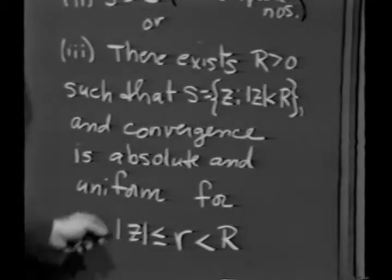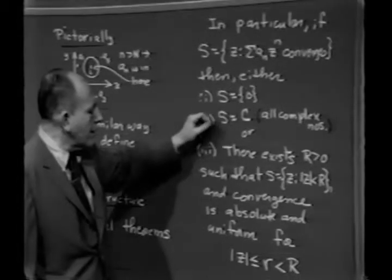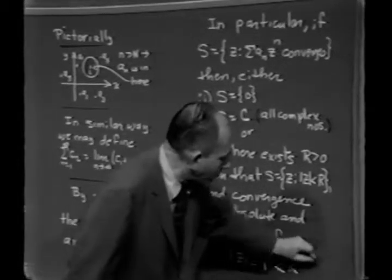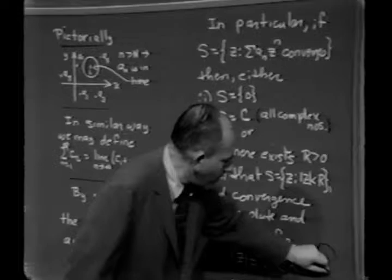Again, in terms of a picture, what we're saying is, if the first two conditions don't hold, given a power series at the origin, I draw a circle. I don't draw a circle.